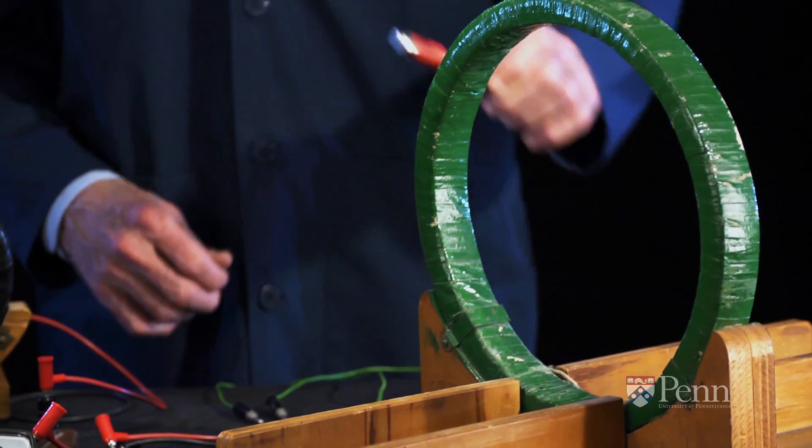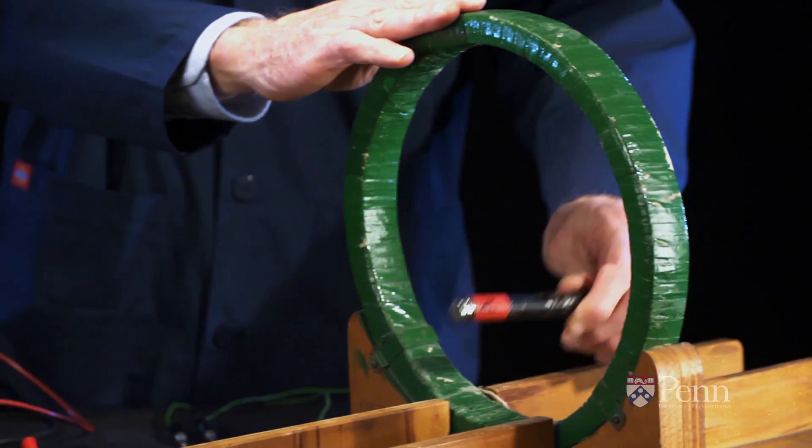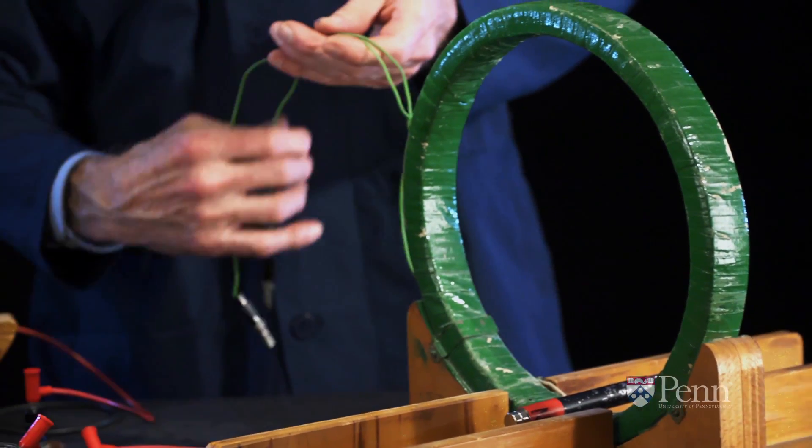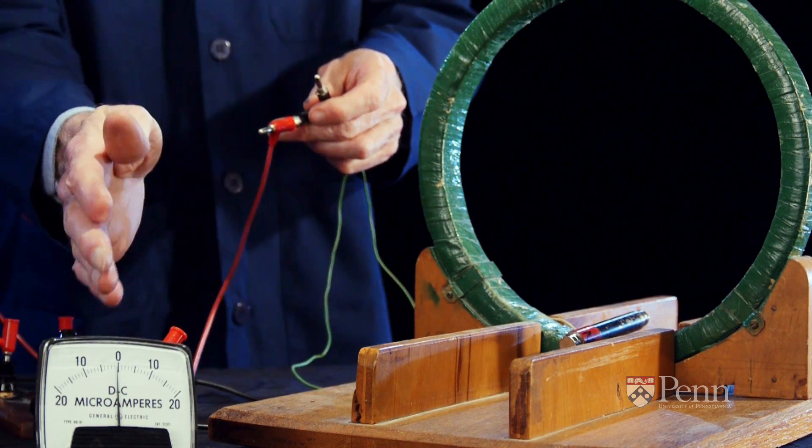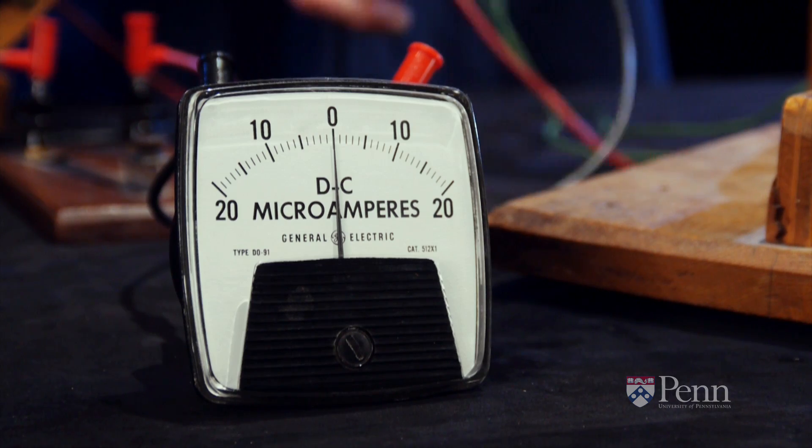It was known that when electricity went around a conductor, it produced magnetism. People had made electromagnets before Michael Faraday came along. If the magnet sits stationary inside the coil of wire, no electricity is made, and we can see that the meter needle is not moving.